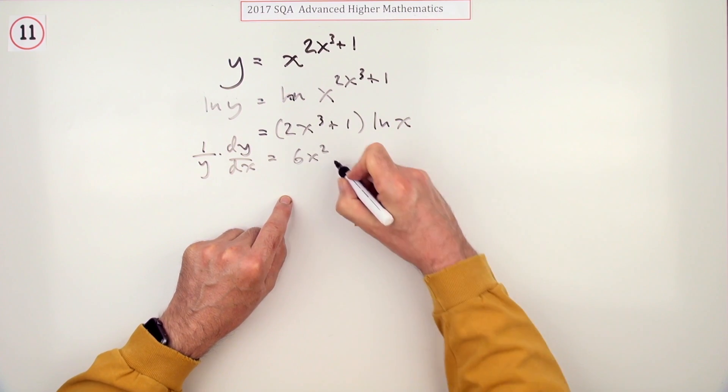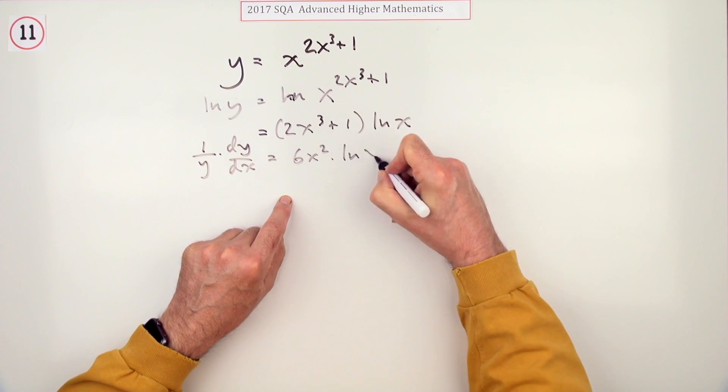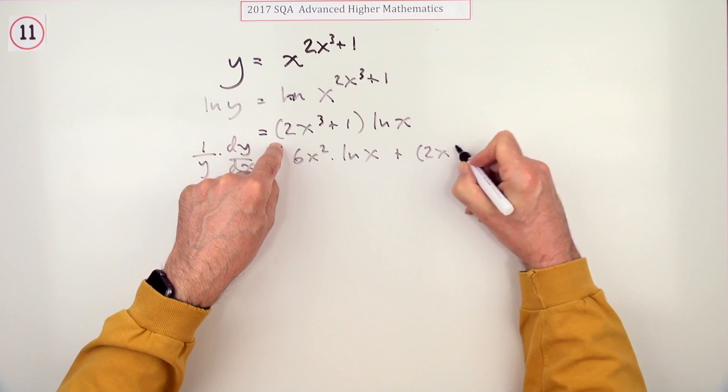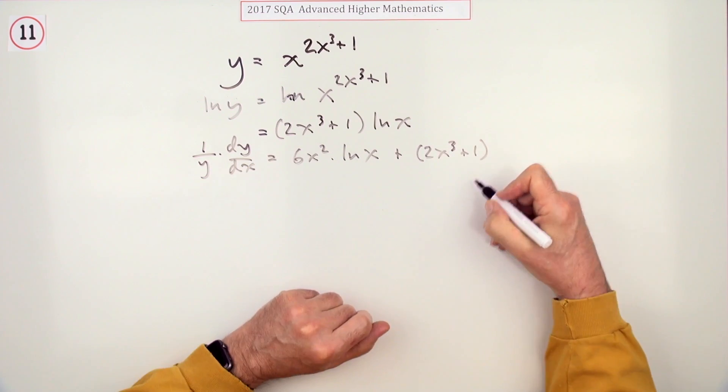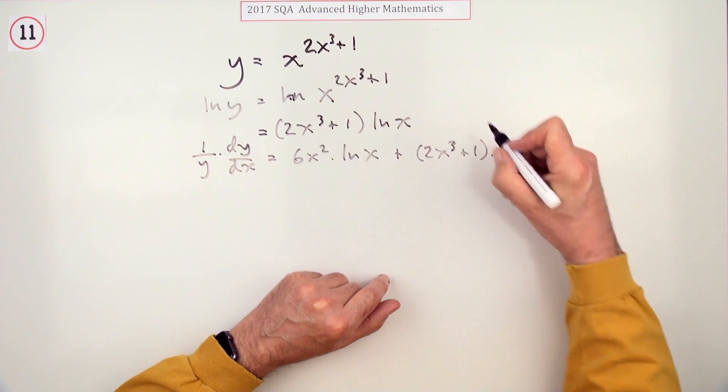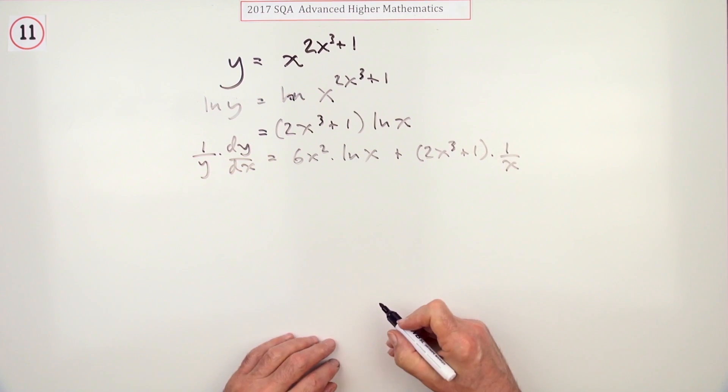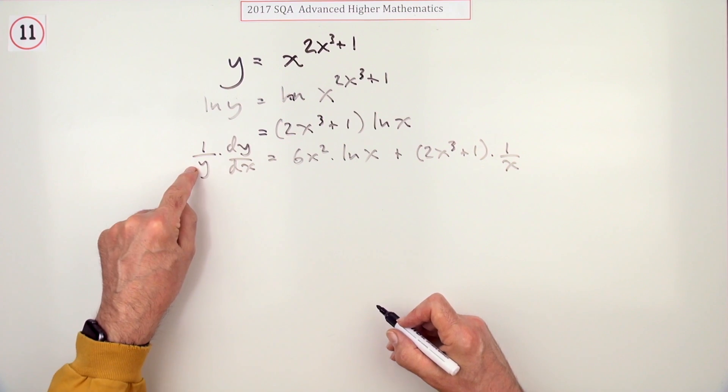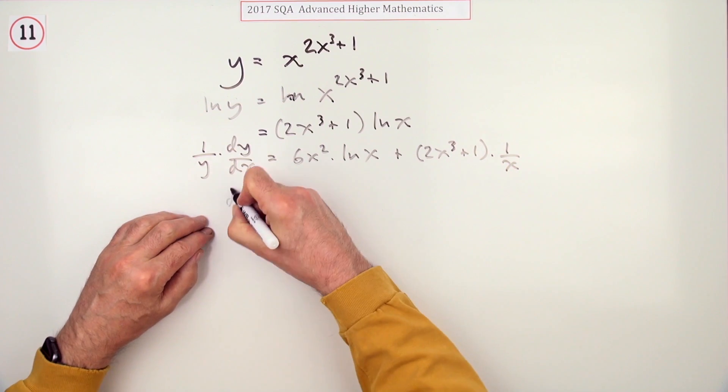6x squared and 1 disappears, so it's just 6x squared times the ln. Now this has been done, so it just waits while this gets its shot at being differentiated, and that just goes to 1 over x.